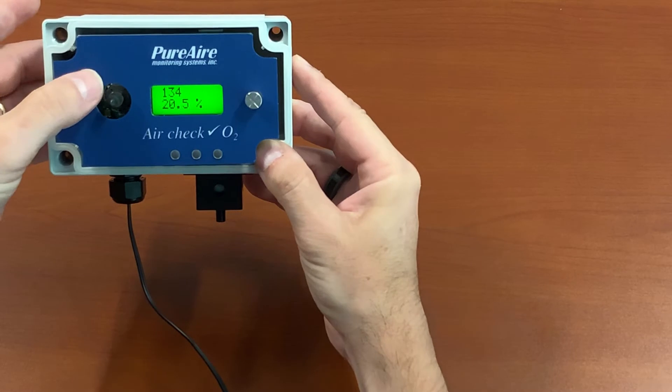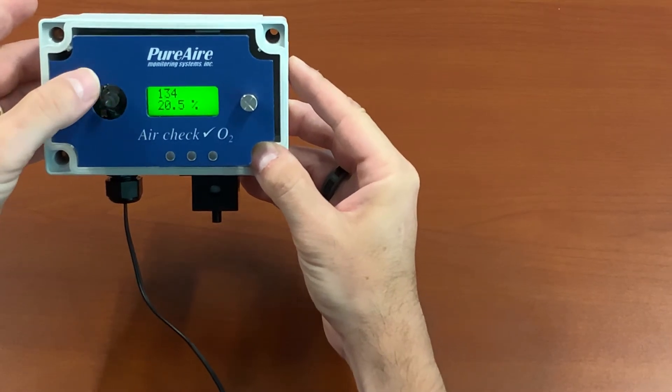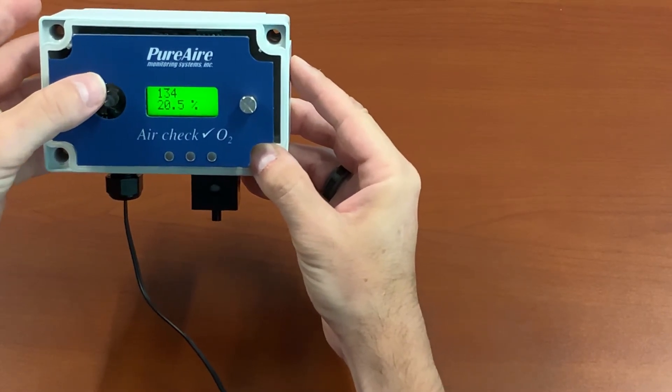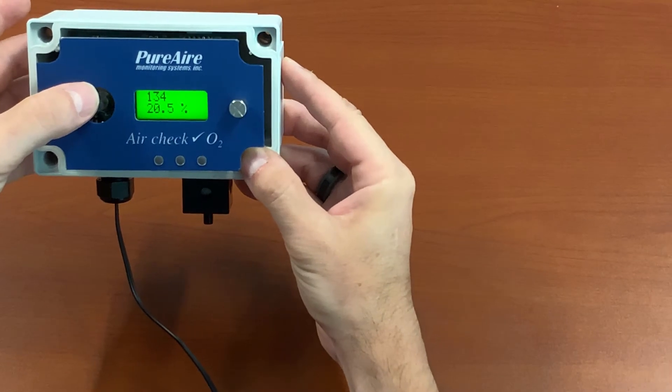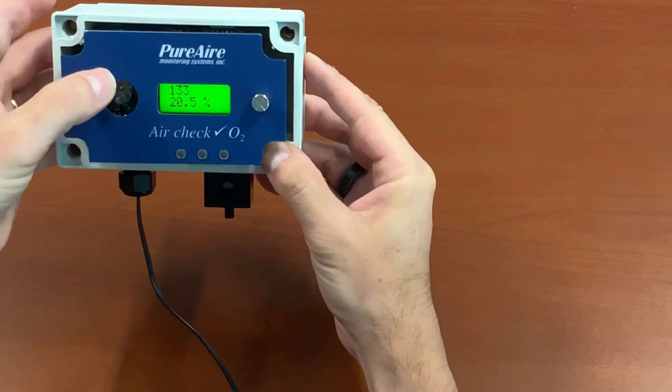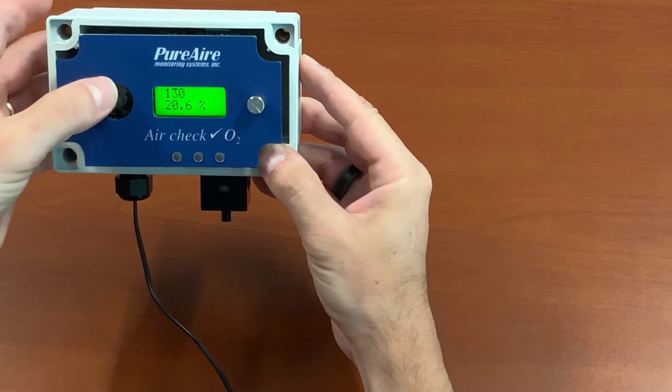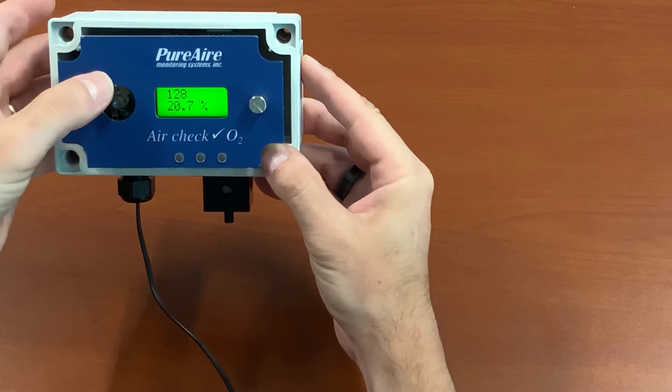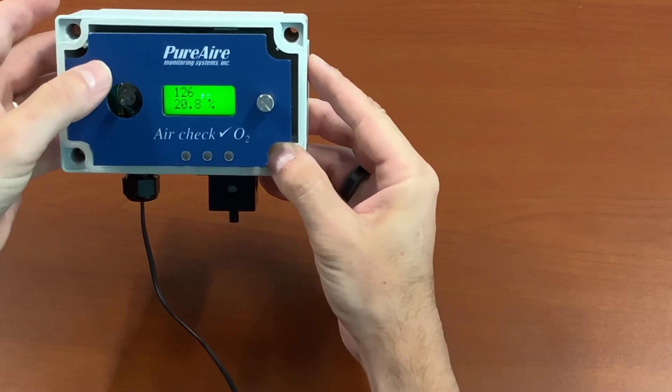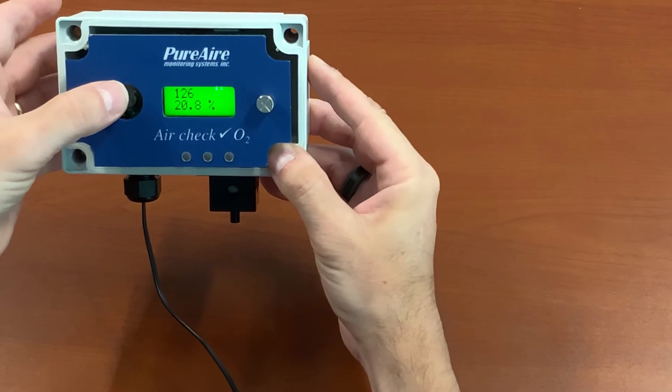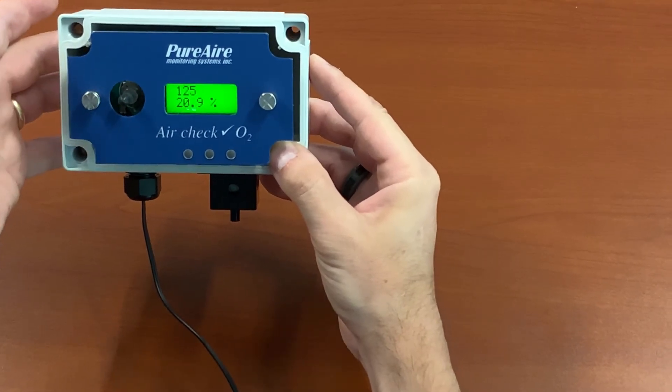So as you can see, it's going to start climbing. Make sure that you do not exhale or breathe on the sensor during this time, because that will cause your reading to decrease, and we're just going to do this until we get to 20.9.